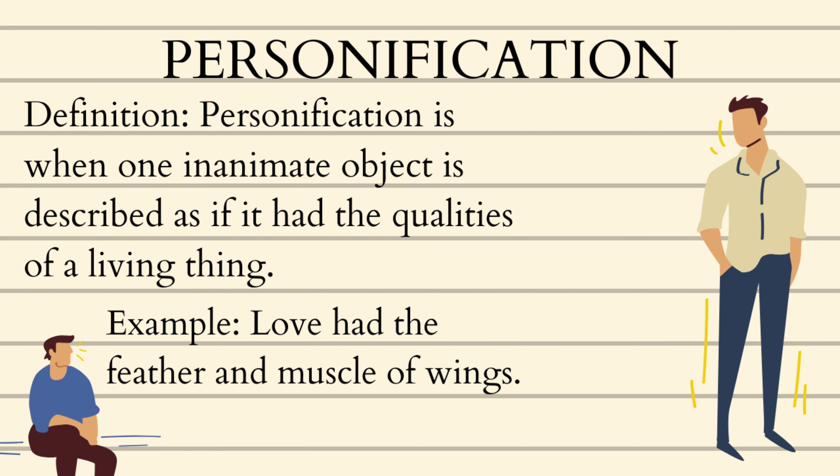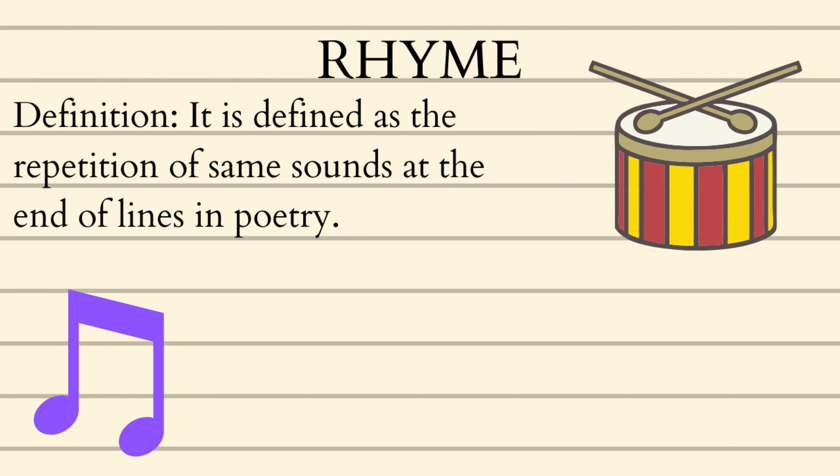The next thing is rhyme, which is very common in music. It is defined as the repetition of the same sounds at the end of lines in poetry. This is not to be confused with a rhyming scheme, which is just the pattern of how things sound. For instance, if the first line ends with 'beach' and the second ends with 'peach,' that would be AA. If the next two lines end with 'pun' and 'none,' that would be BB. So the rhyming scheme would be AABB — that is the difference between rhyme and rhyming scheme.